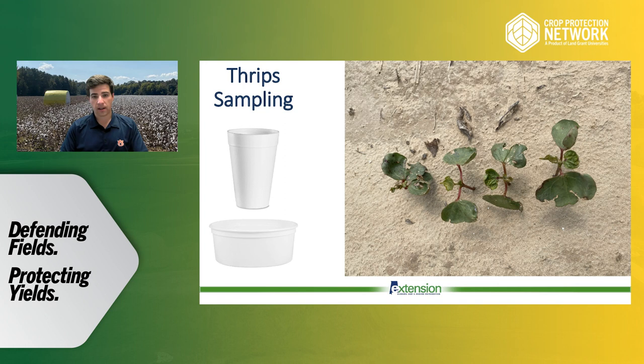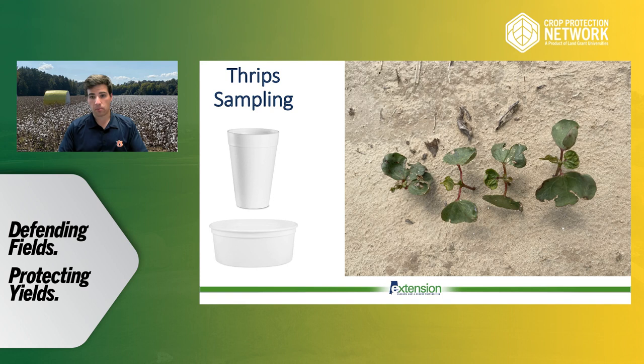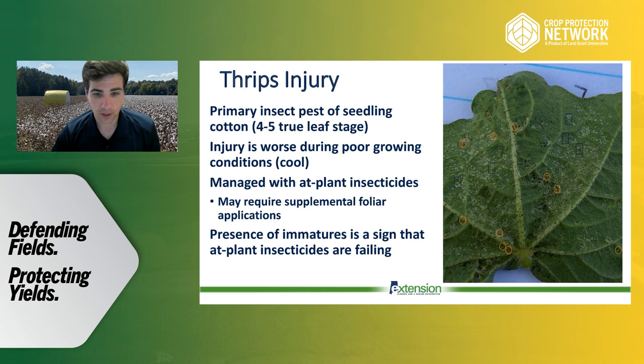How do we sample for thrips? The easiest way is to take a white Styrofoam cup or white Cool Whip container, go out and beat some plants onto the white container, and then look in and see how many thrips you have. Although they're very small, if you get a good white container to make the contrasting colors obvious, you can see them crawling around. Cotton seedlings need protection from thrips somewhere around the fourth to fifth true leaf stage — after that, the cotton can generally outgrow any injury thrips may do.